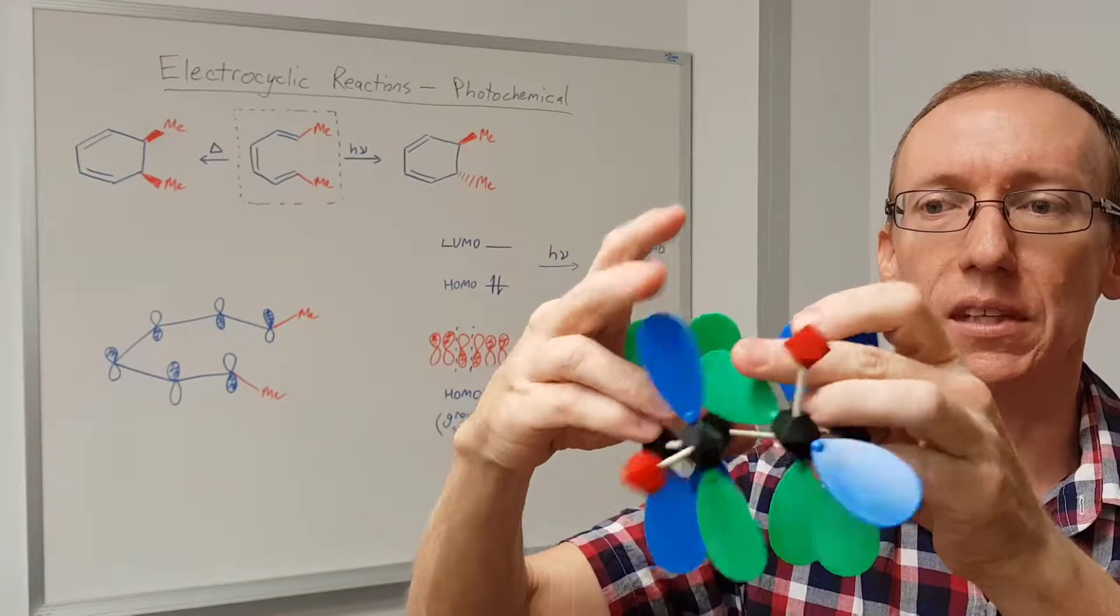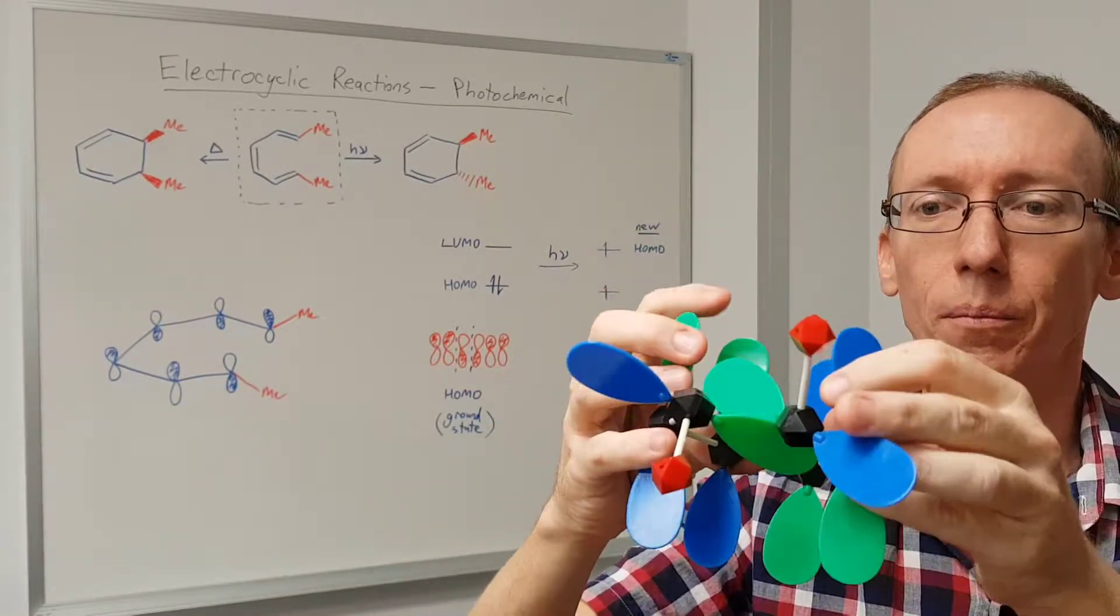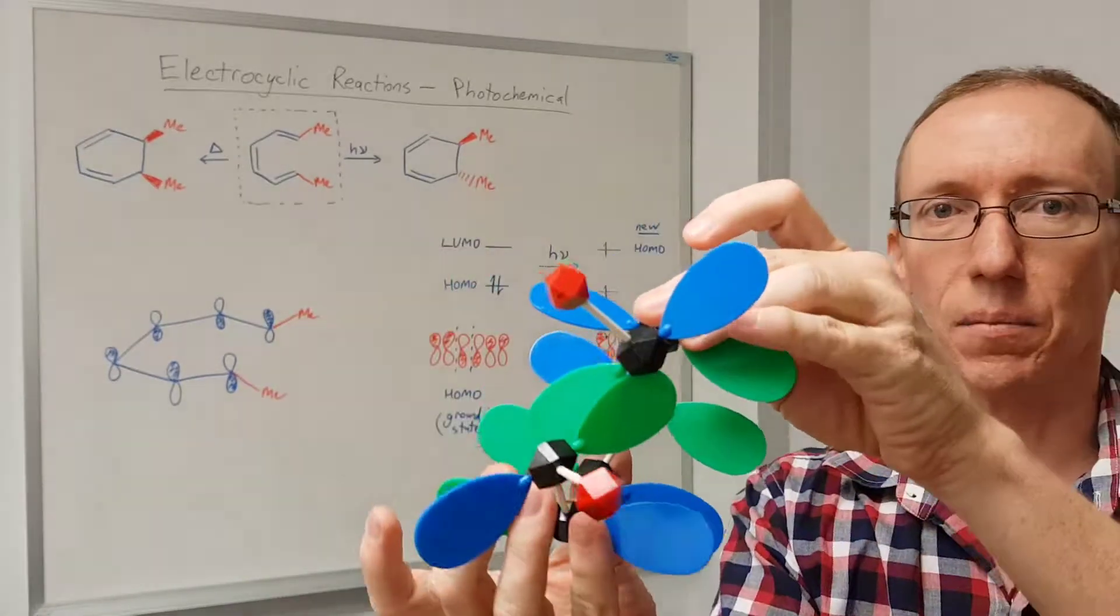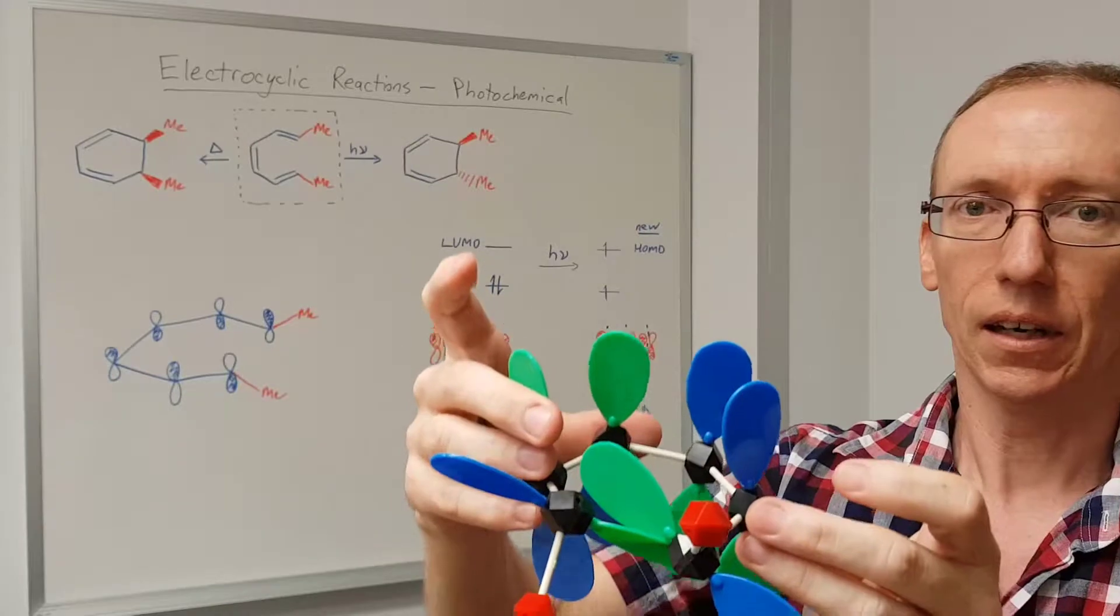We just need them both to give constructive overlap at the ends of the molecule. This gets a bit fiddly with these models. But in either direction, we're going to get the trans diastereomer of the product.